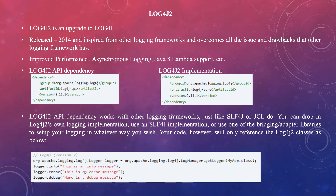Log4j2 is similar to SLF4J and JCL in that it also uses the logging interface concept. If you want to use just the specification with a different implementation such as Logback, you can do that by including the Log4j2 API but using Logback in your classpath instead of log4j-core.